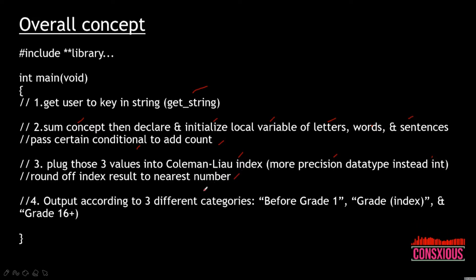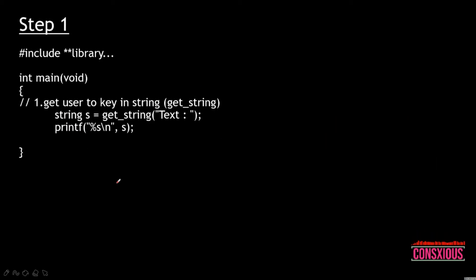Once we find the solutions, we have to round to the nearest number. Then we categorize into three different categories: before grade one, grade index which is the answer, and grade 16 plus. For step one, we need to include certain libraries and get the user to key in the string using get_string with the text.